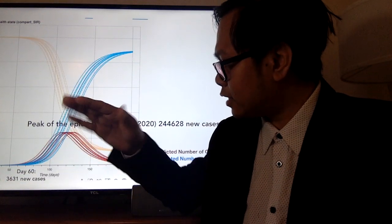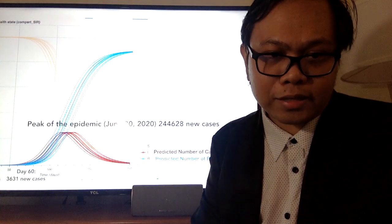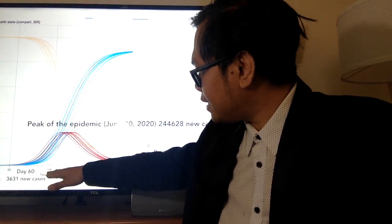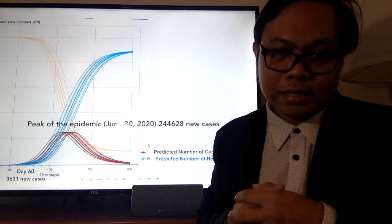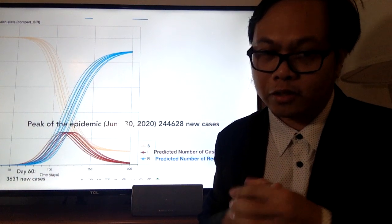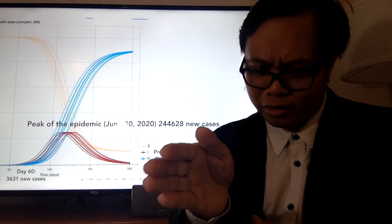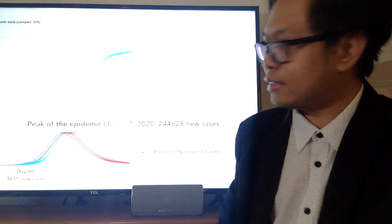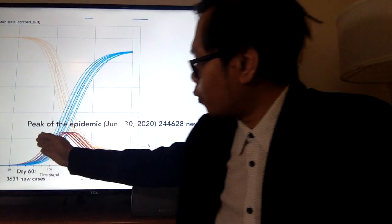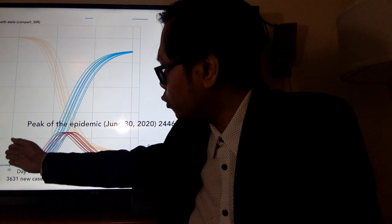Sa loob ng 30 days, ang estimate is 150 new cases. Sa loob ng 60, at day 60, we'll expect 3,600 new cases. This is not cumulative. Yung araw na yun, makaka-expect tayo ng around 3,600 cases. We want to prevent this by doing some measures.